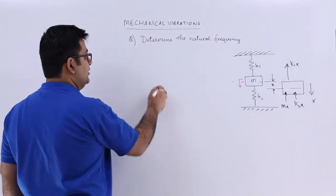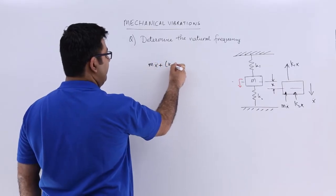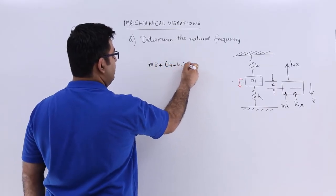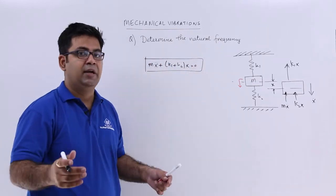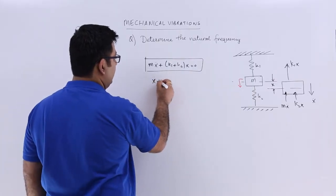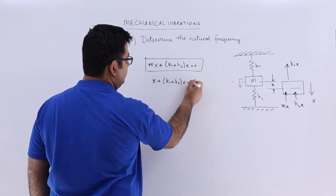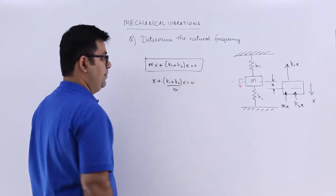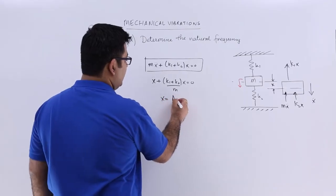So I will have MX double dot plus K1 plus K2 into X is equal to 0. This is your differential equation: X double dot plus K1 plus K2 upon M into X is equal to 0. And then you can say that X is equal to A sin omega t, so X double dot is equal to minus omega square X.